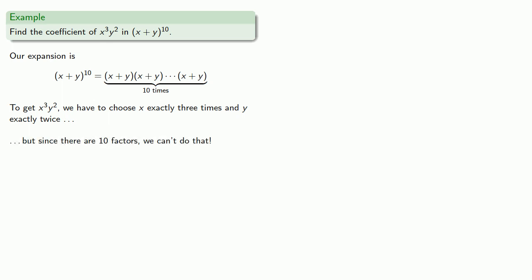The thing to remember is you must choose a term from each of the factors. So this is a pretty easy problem—the coefficient is zero. And in a kind and gentle universe, all binomial expansions would be this easy. We don't live in that universe.